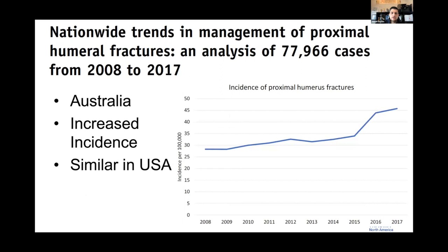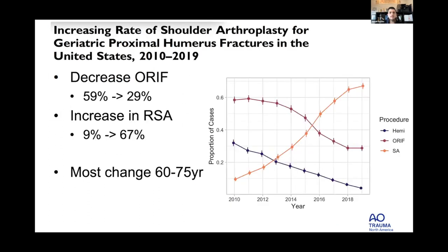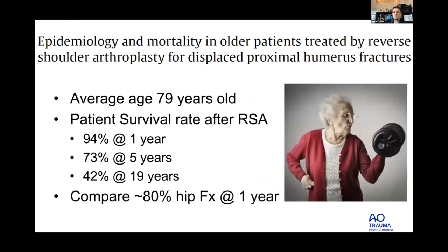The number of proximal humerus fracture cases is going up as the population ages. Interestingly, treatment rates for ORIF have been going down, with much higher rates of reverse shoulder arthroplasty. The biggest change is in the 60-to-75-year-old patient group. Importantly, these patients are different from hip fractures — almost half are still alive at 20 years, so they need good function and we need to think of them as a whole.